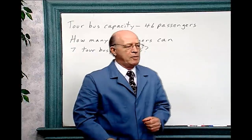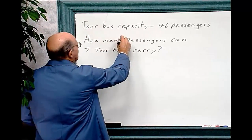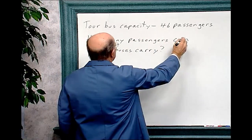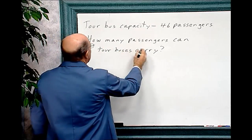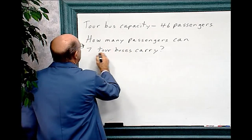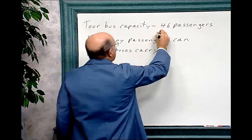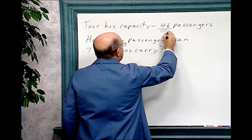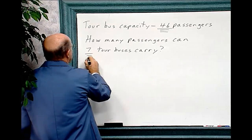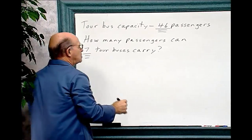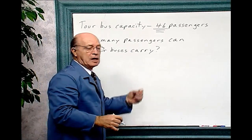Let's do the math. The tour bus capacity is 46 passengers. The question is, how many passengers can seven tour buses carry? So each bus carries 46 and there are seven of these buses. So we have to multiply 46 by 7 to get the answer.